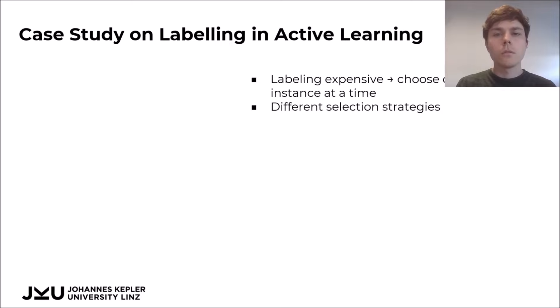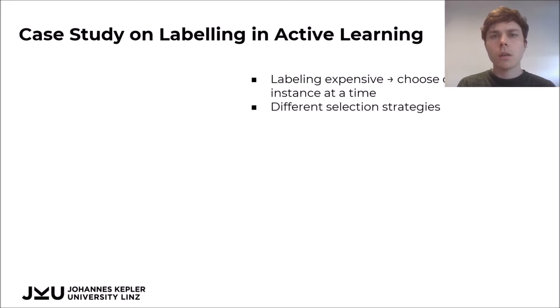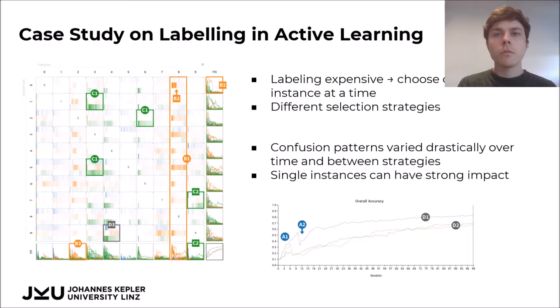To evaluate the usefulness of Confusion Flow, we conducted a case study with collaborators working on active learning. Since labeling datasets is an expensive process, active learning tries to minimize the number of data items that need to be labeled manually by carefully selecting which item to label next. This is done using different selection strategies. The model is re-evaluated after each instance, creating a very fine temporal granularity. The fact that our collaborators wanted to compare different strategies made this scenario a very fitting one for Confusion Flow. They were very surprised how the confusion patterns varied over time and between strategies.